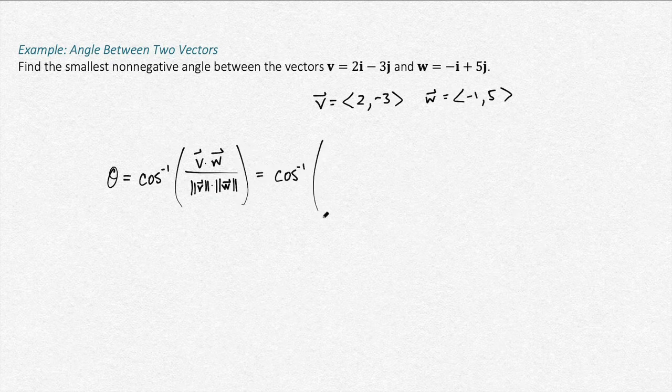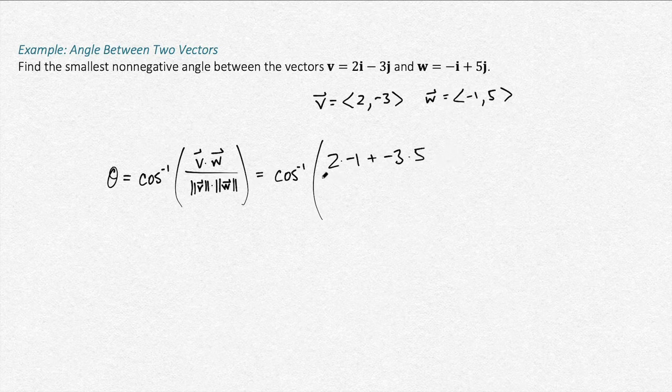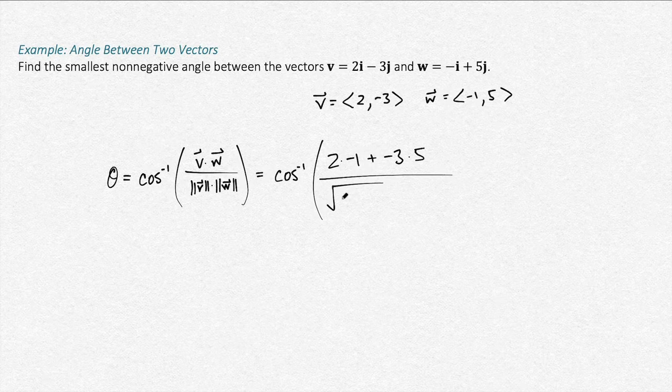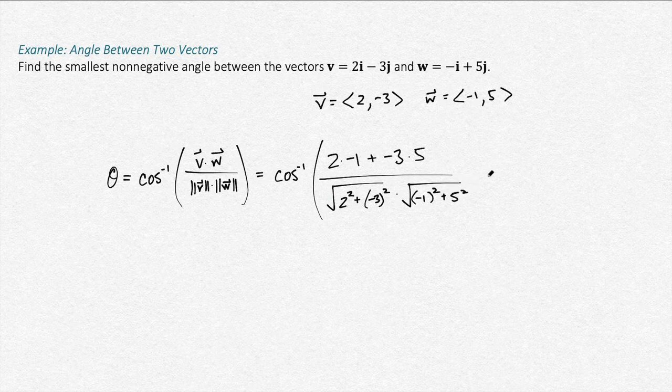So cosine inverse of the dot product. That's 2 times negative 1 plus negative 3 times 5, over the magnitude of each of these. The magnitude is the square root of 2 squared plus negative 3 squared, and the magnitude of w is the square root of negative 1 squared plus 5 squared.